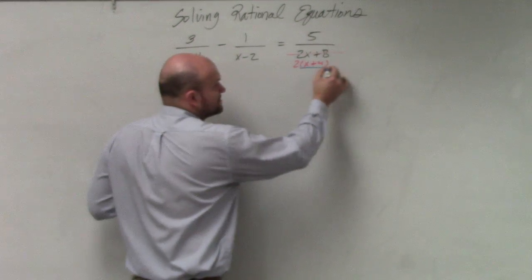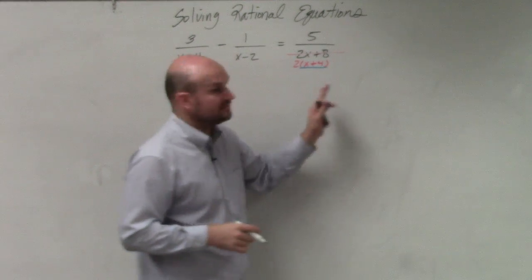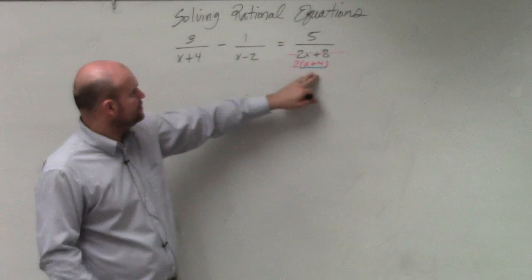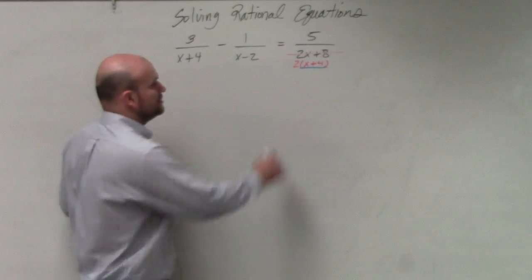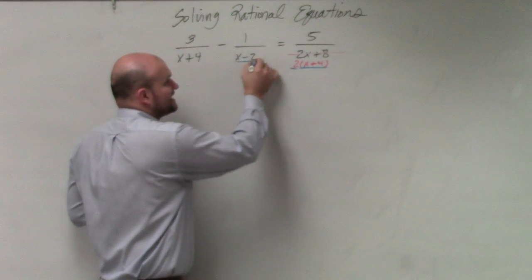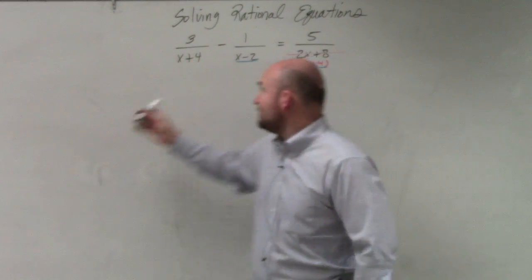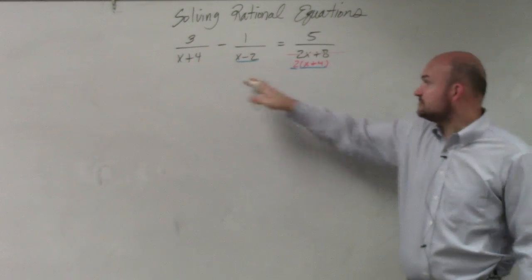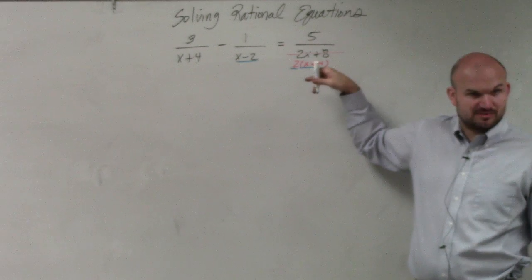So you guys can see I have x plus 4, that is unique. These two share it. 2 is unique, and x minus 2 is unique. But I'm not going to include this x plus 4 because that's redundant. I already have it included in x plus 4.